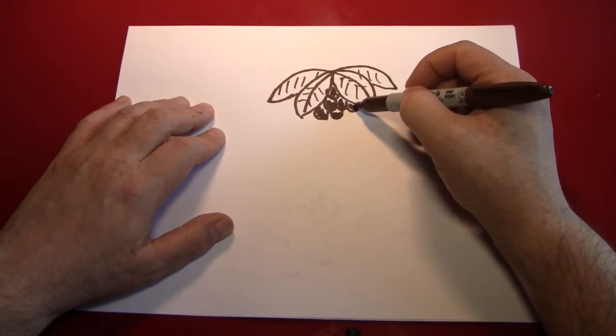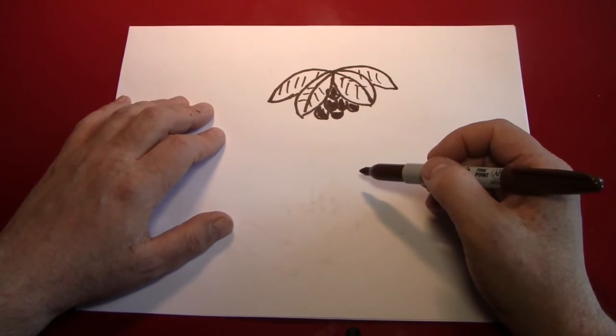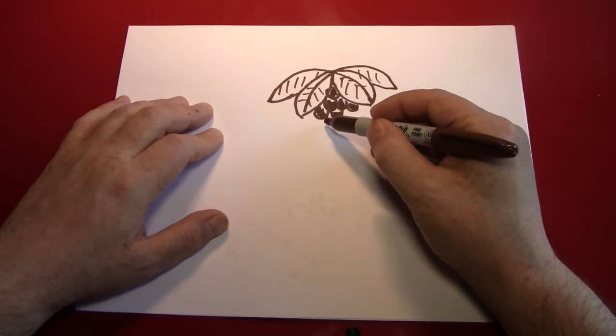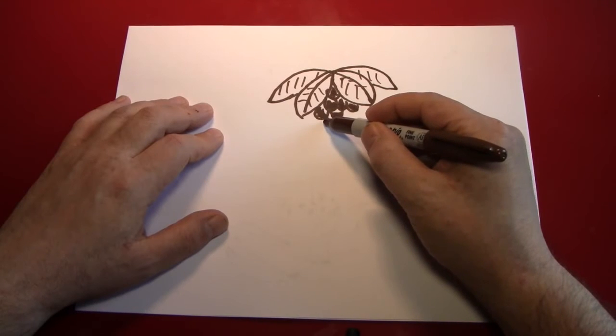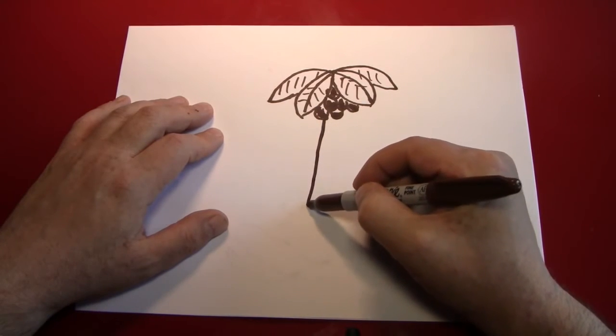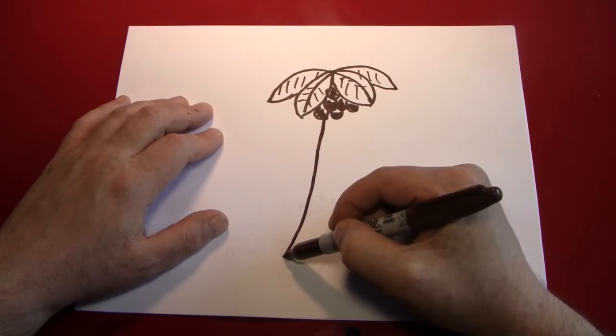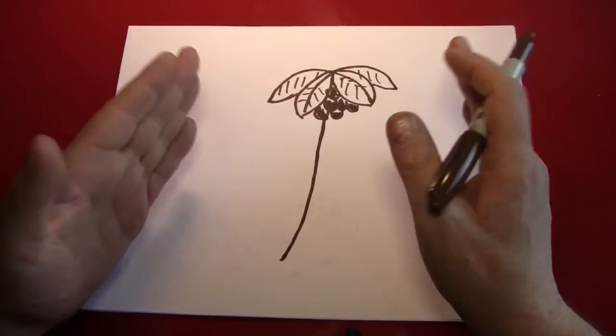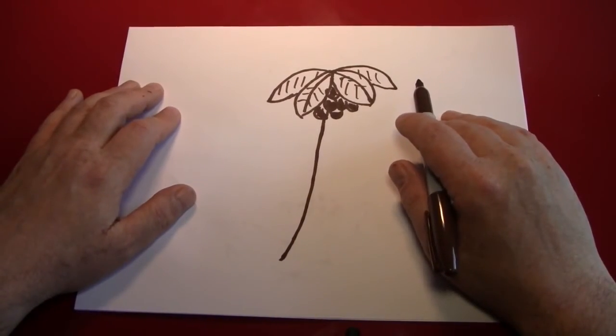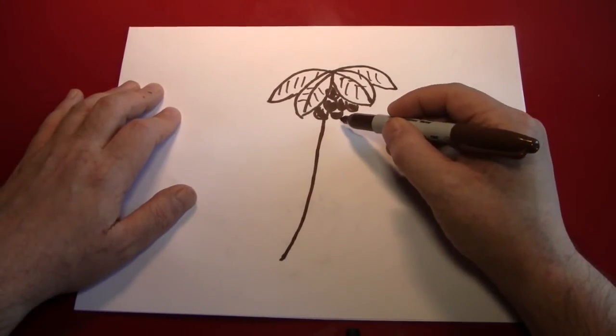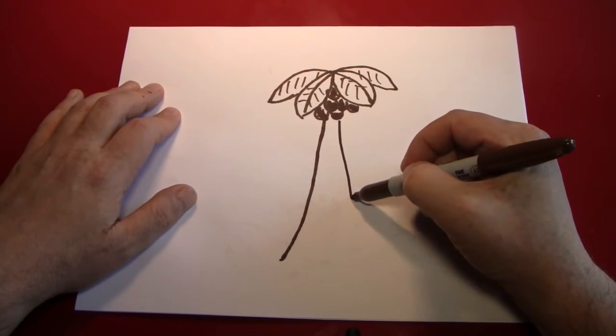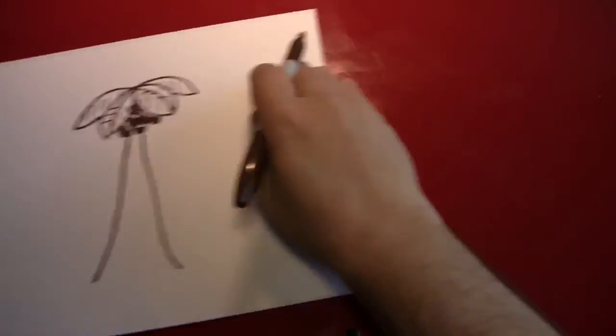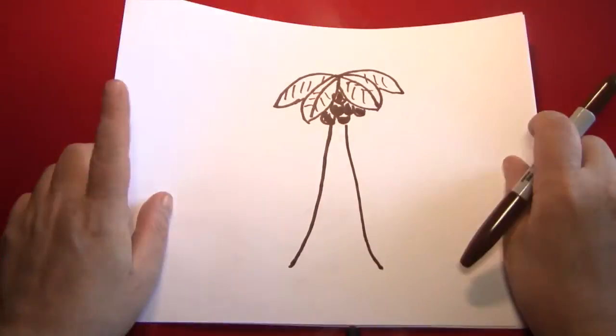Here we go, that looks dandy. Next all we need is the trunk of the tree. Start over here and just bring a nice straightish curved line down like that. Don't worry, palm trees are very bendy, they're very flexible, so you can be kind of flexible with the way you draw them. Bring down another line, and there you are.